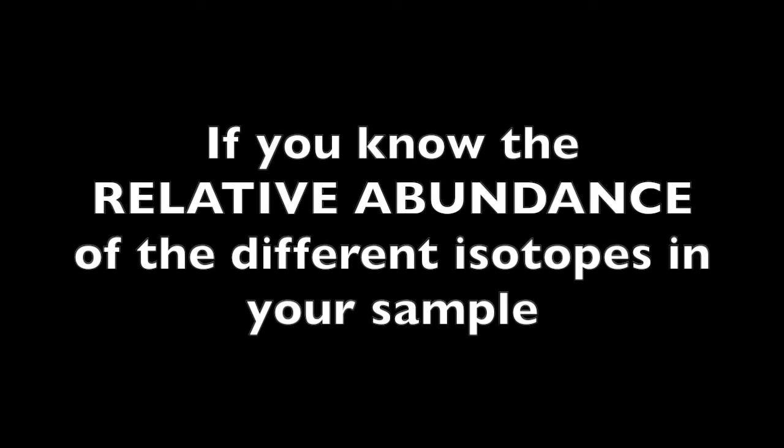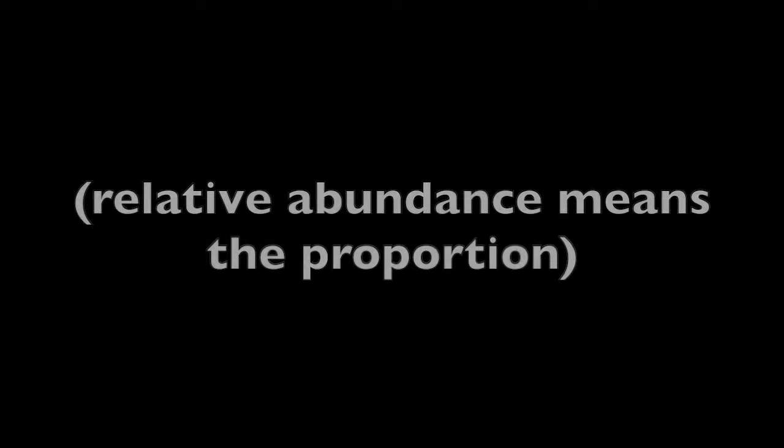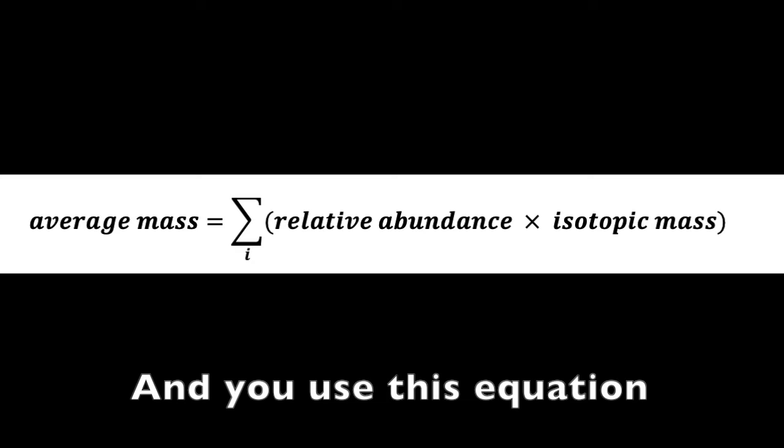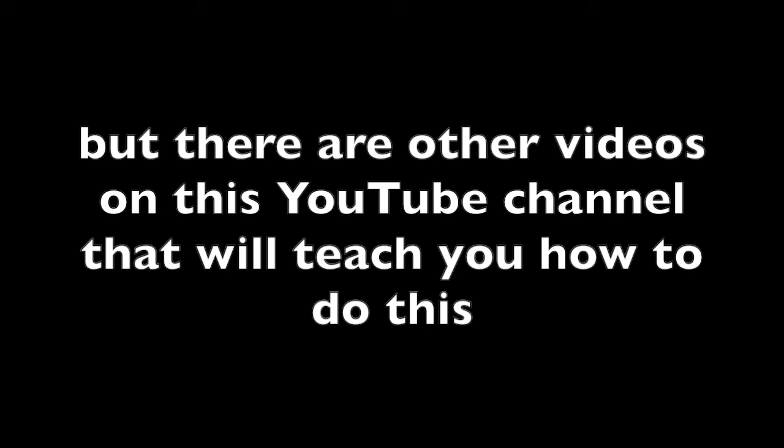Just in case you're curious, average atomic mass is something that you can calculate if you know the relative abundance of the different isotopes in your sample. Relative abundance means the proportion. You also need to know the mass of each isotope, and you use this equation to figure out the average mass. This is beyond the scope of this video, but there are other videos on this YouTube channel that will teach you how to do this.